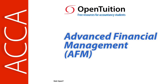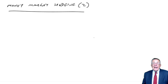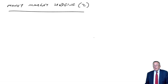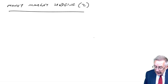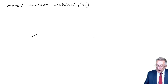This is a lecture from OpenTuition. To benefit from the lecture, you should download the free lecture notes from OpenTuition.com. In the last lecture, we looked at money market hedging, and I went through an example where we were receiving money. Because it does confuse some people, I think it's important I also show you what we do when we're paying money.